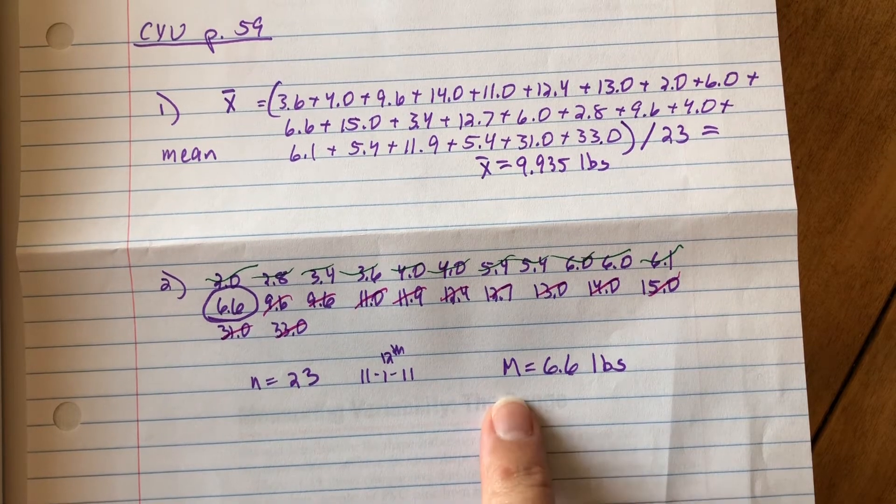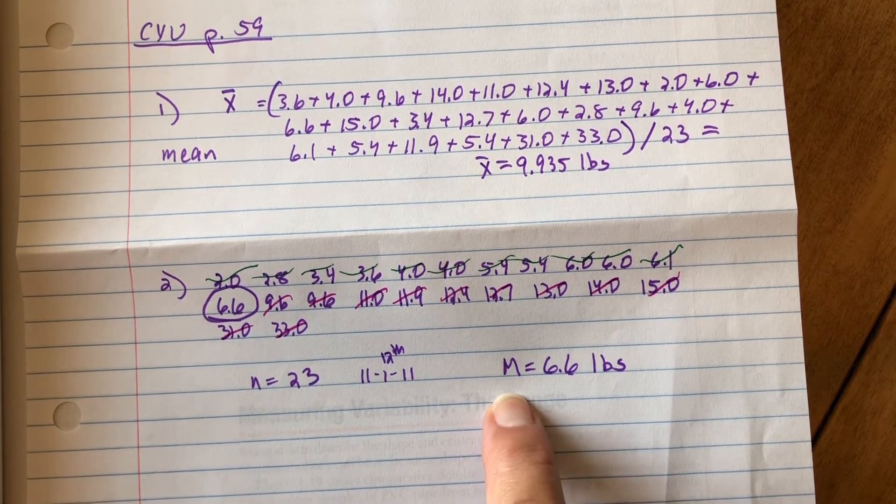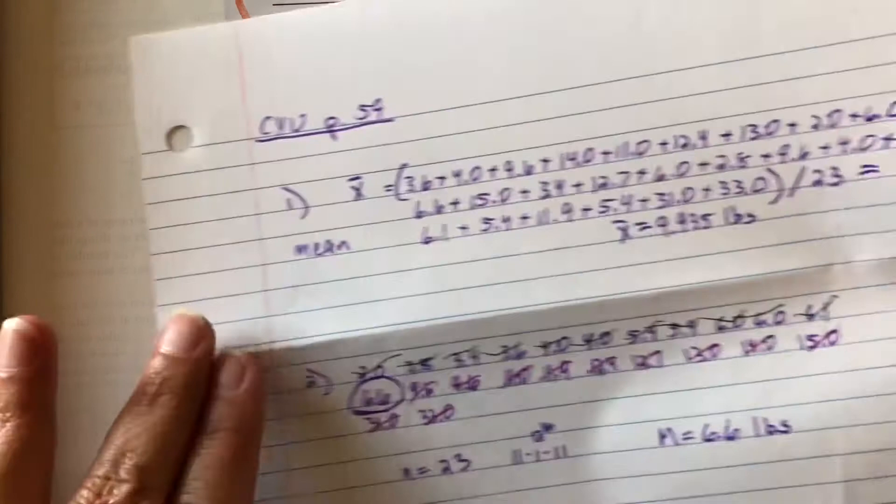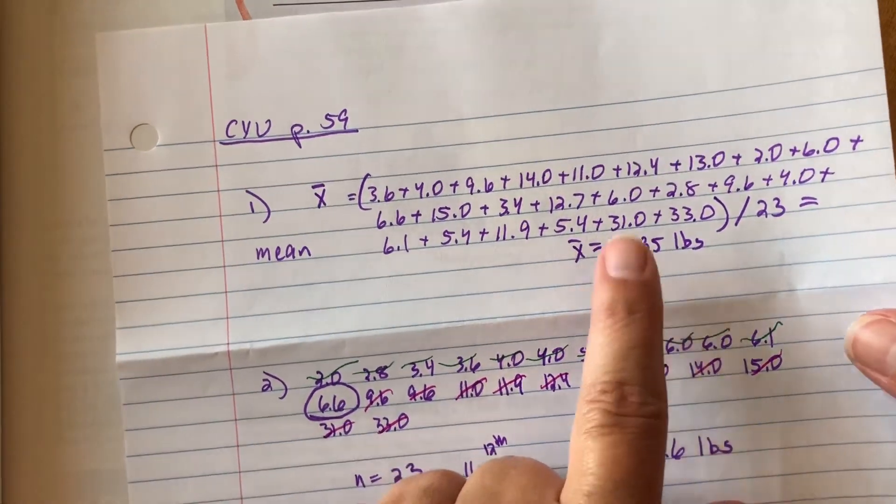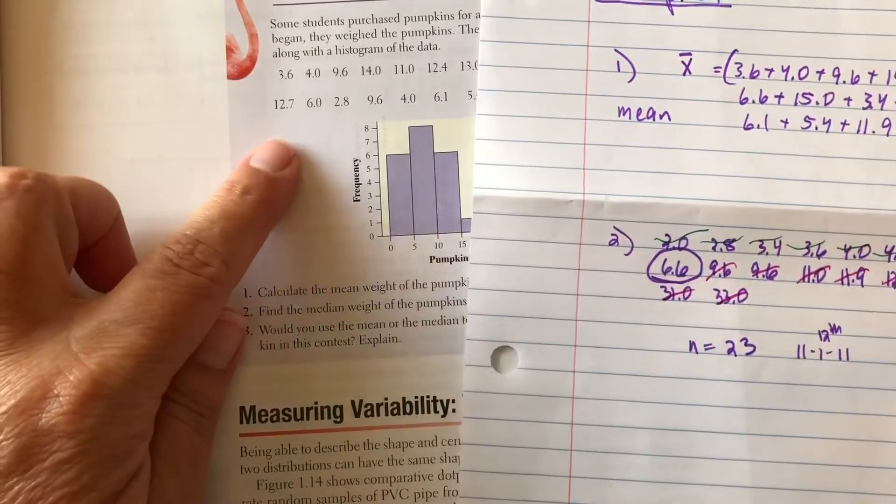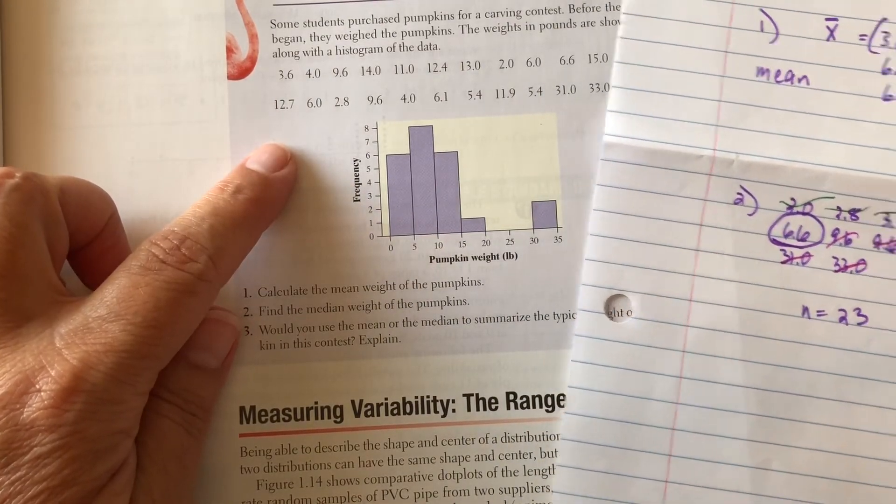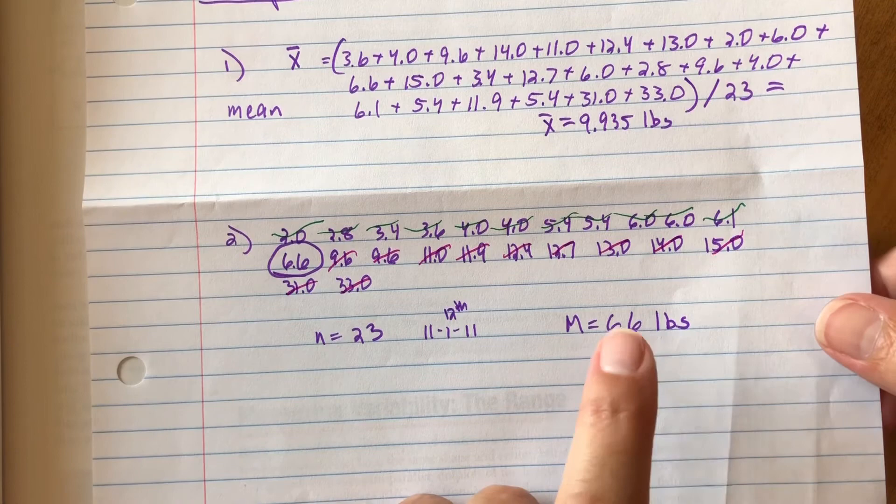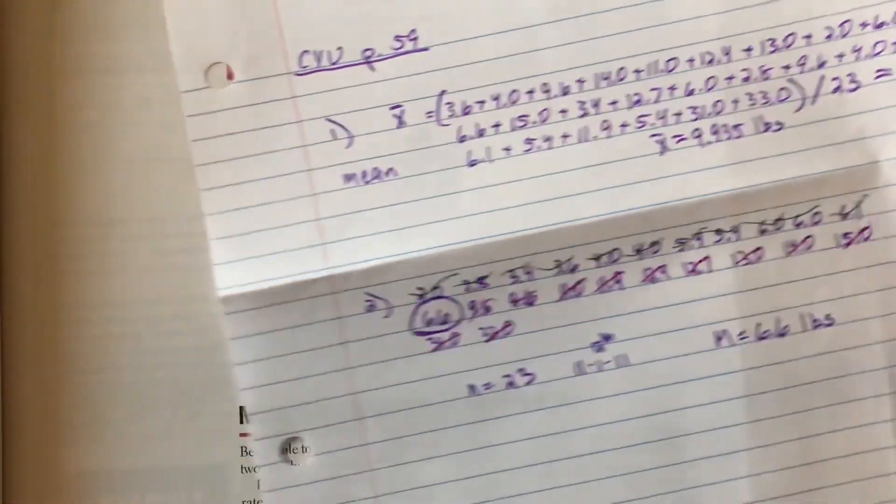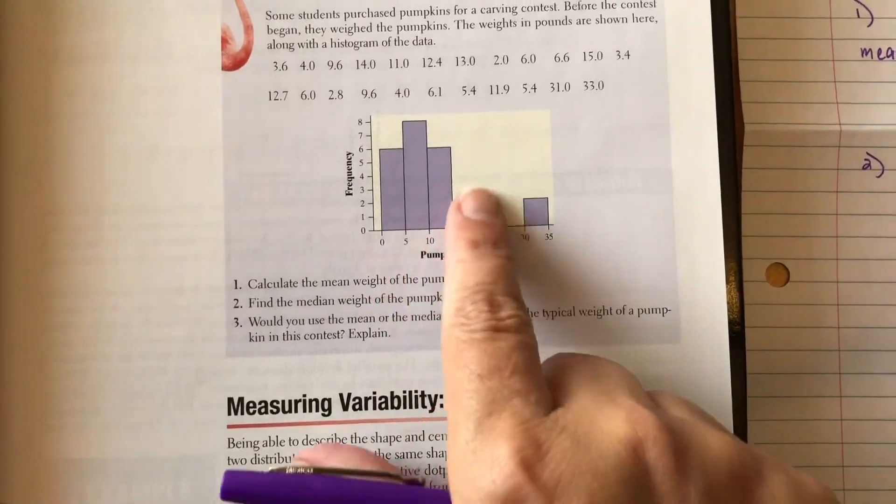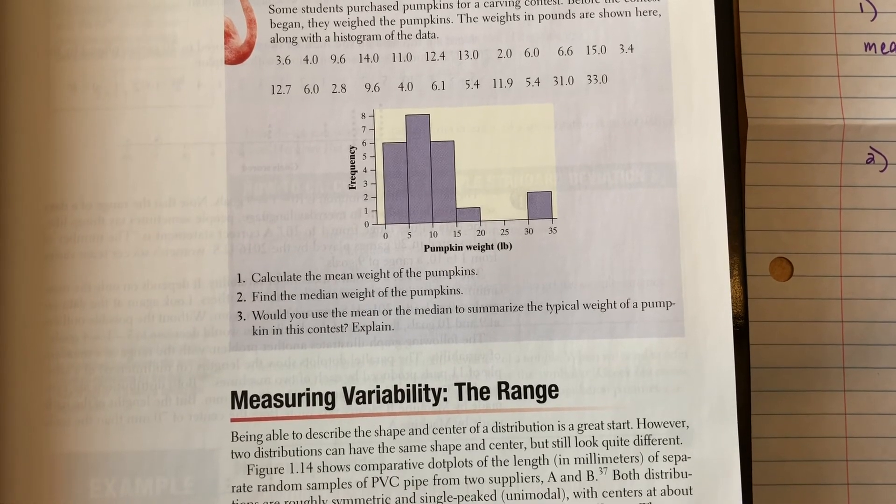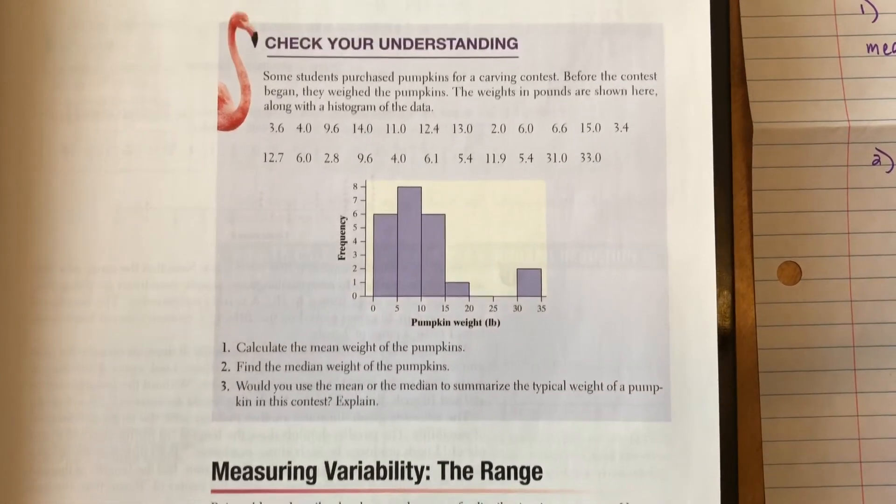In a skewed distribution, the median is a better indicator of the typical value in that distribution because median is not impacted by any kind of extreme values. The mean is, the average is. We use mean when we have a symmetrical distribution. So if I was going to say what is the typical weight of a pumpkin that these students got, I would say the typical weight is 6.6 pounds. Because medians are better to use with a skewed distribution and means are better to use with a symmetrical distribution simply because medians are not going to be impacted by an extreme value where the mean would be. We don't want to use that in a skewed distribution. I hope that was helpful. See you next time.